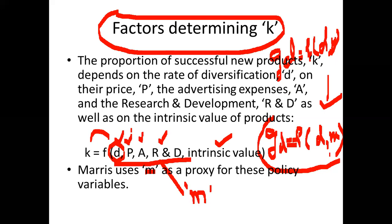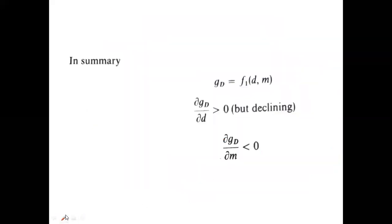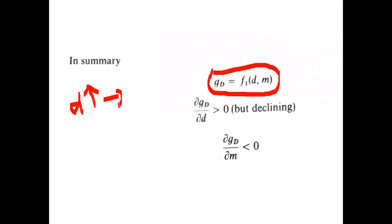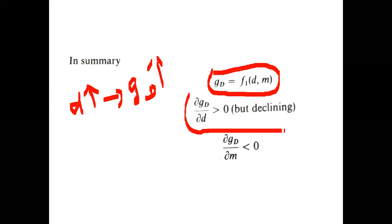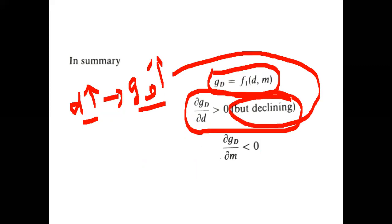In summary, gd is a function of diversification rate and profit margin. If your diversification rate is high, then gd is also likely to be high. Partially differentiating gd with respect to diversification rate is always positive — greater than zero — meaning as d increases, gd also increases, but at a declining rate.